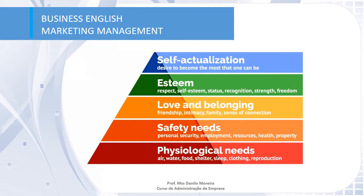The first concept related to needs is the Maslow Pyramid, where we have divided all five steps of needs every human being has. The first and most basic step is physiological needs: air, water, food, shelter, sleep, clothing, and reproduction. According to Maslow, every human being needs to achieve these things before moving to the second step — safety needs.